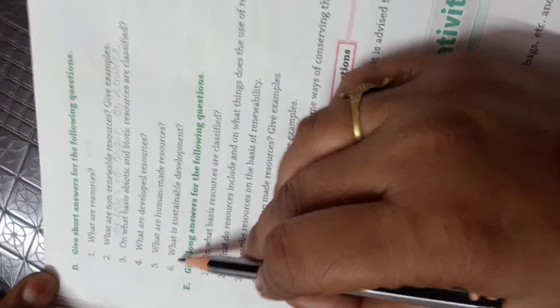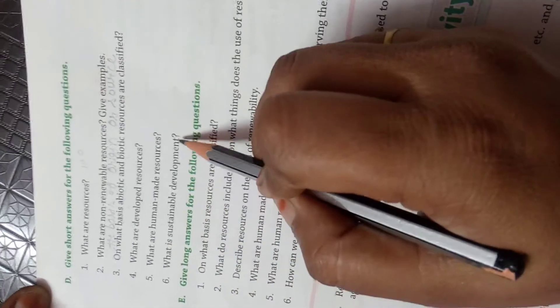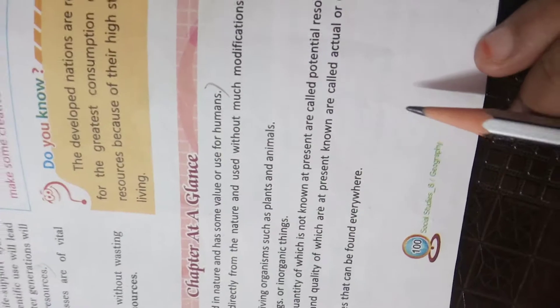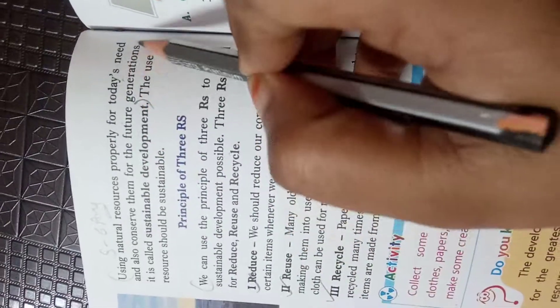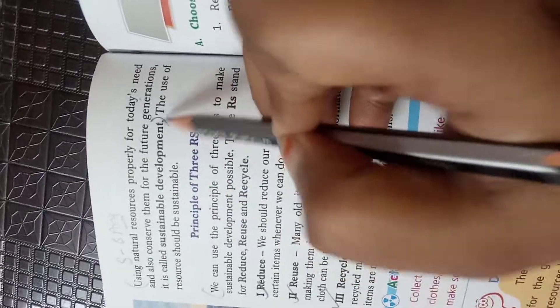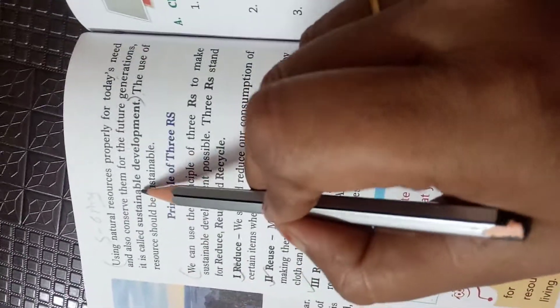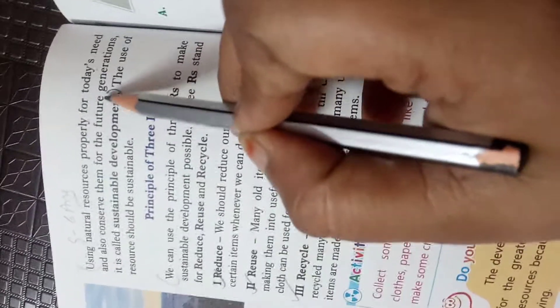Sixth question: what is sustainable development? Answer six is on page number 100. Using natural resources properly for today's needs and also conserving them for future generations is called sustainable development. Start from 'using natural resources' and end at 'sustainable development'.